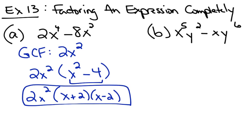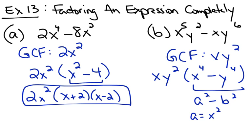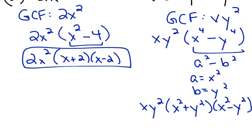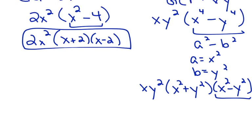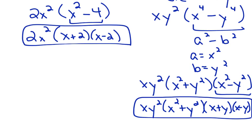In problem b, first look for the greatest common factor. Both terms share an x and a y squared, so when I take out xy squared I'm left with x to the fourth minus y to the fourth. This is in the format a squared minus b squared, where a is x squared and b is y squared. So when you factor that, you get x squared plus y squared, x squared minus y squared. But wait — this x squared minus y squared is also in the form a squared minus b squared, so it can be factored further into x plus y, x minus y.